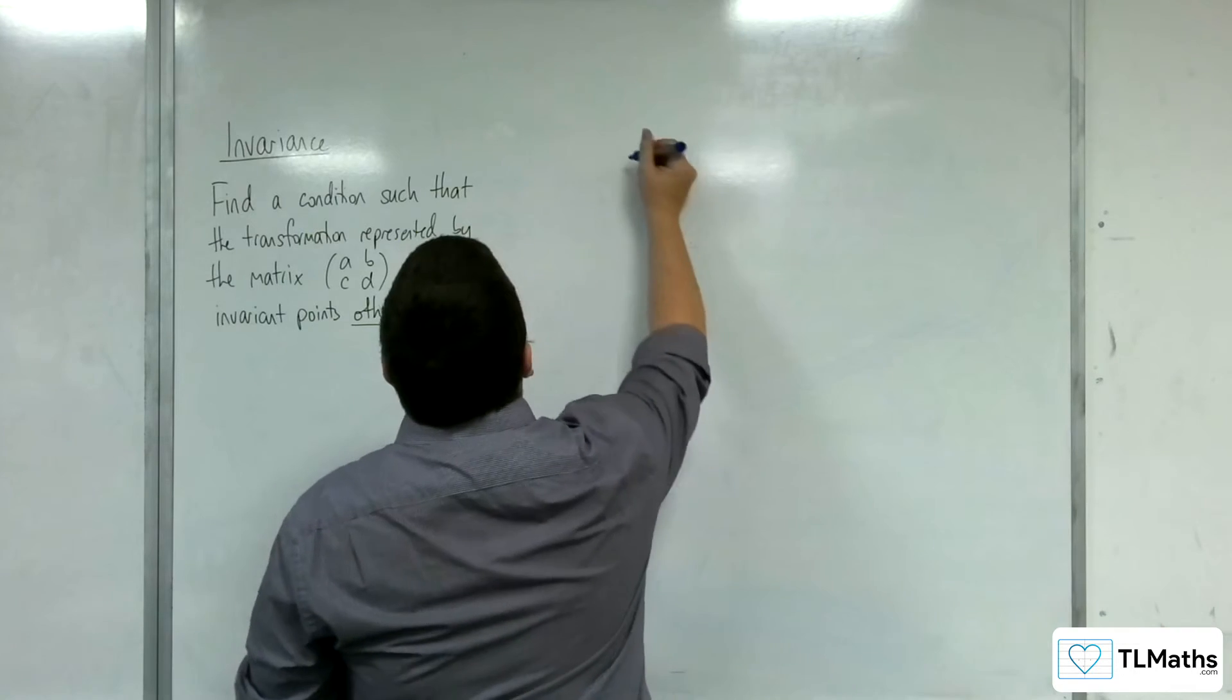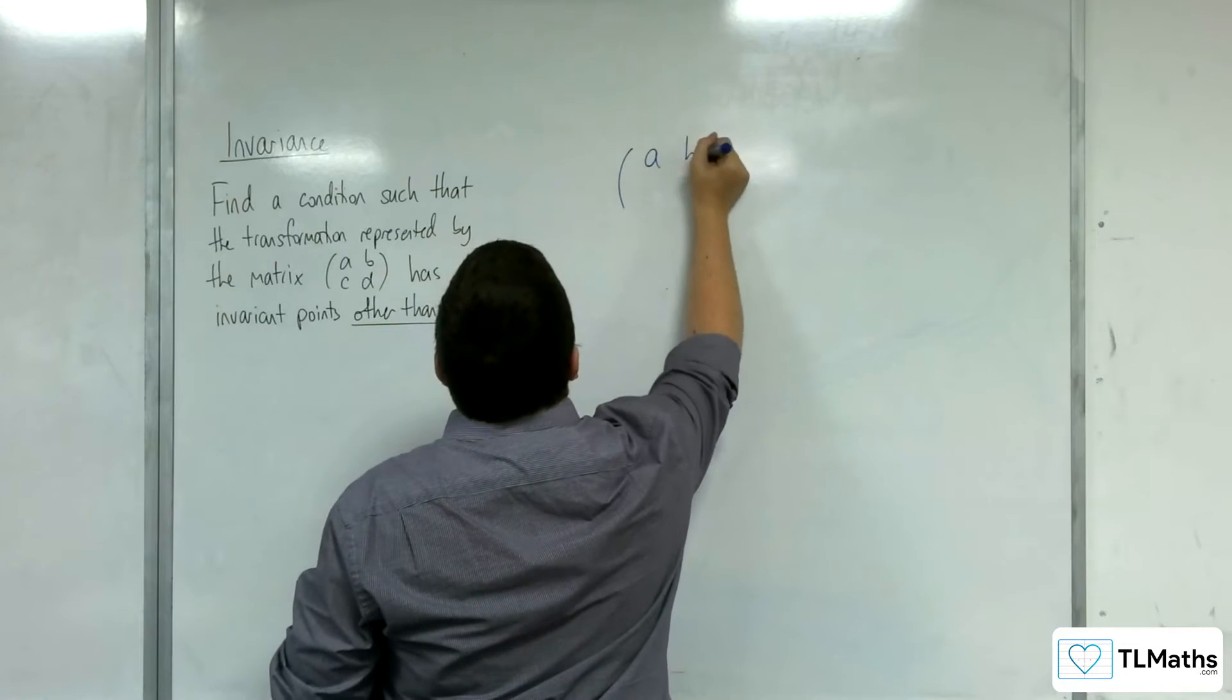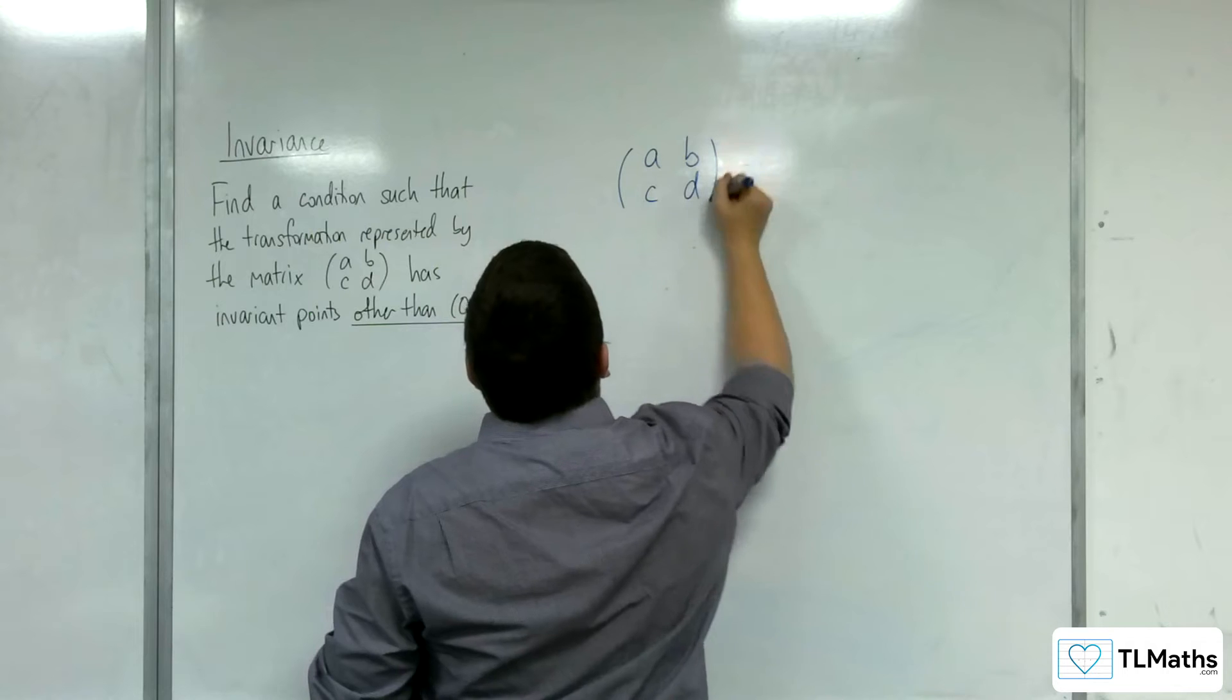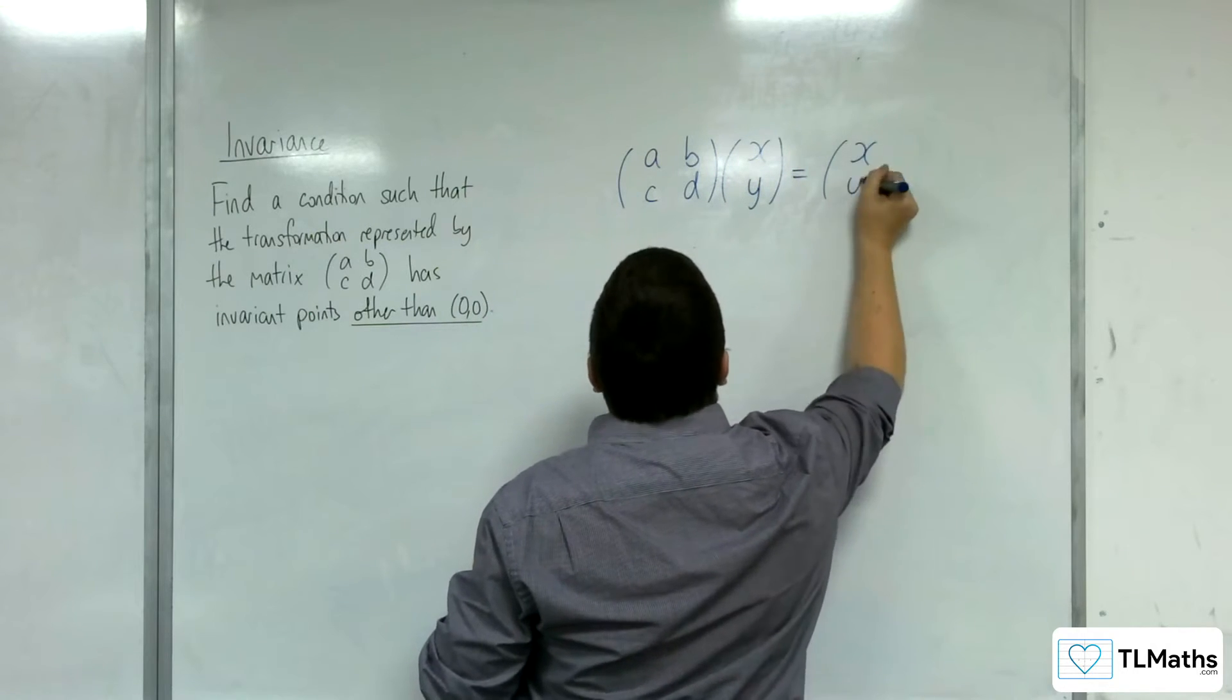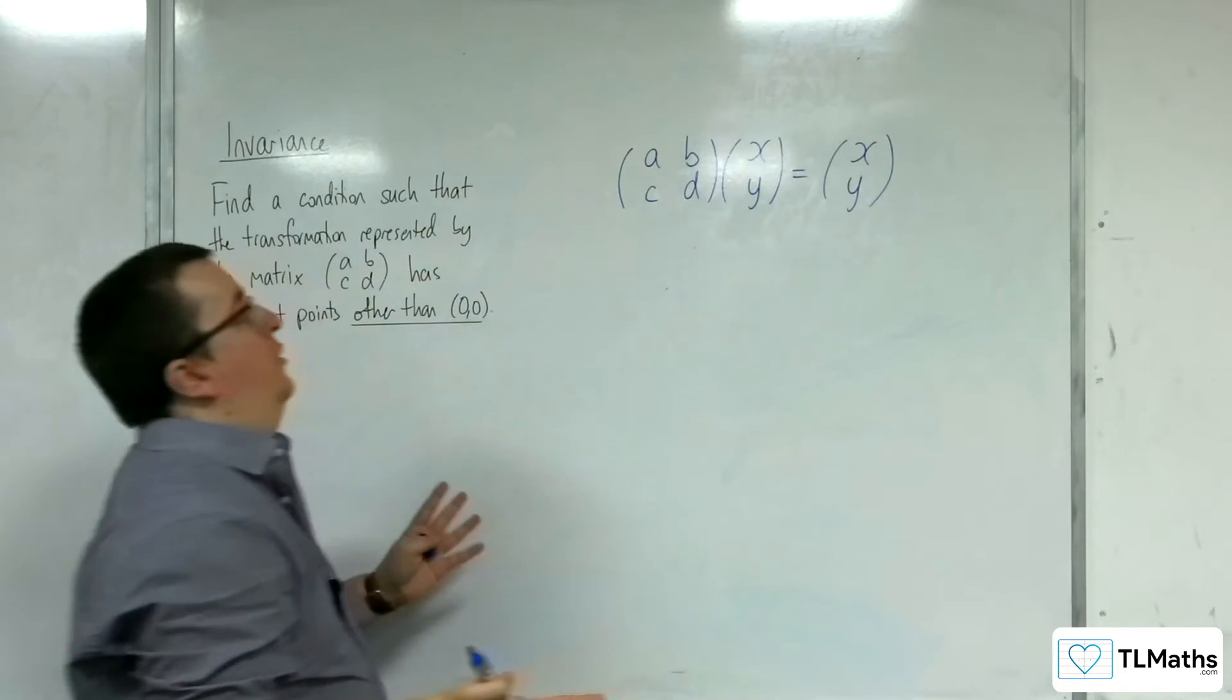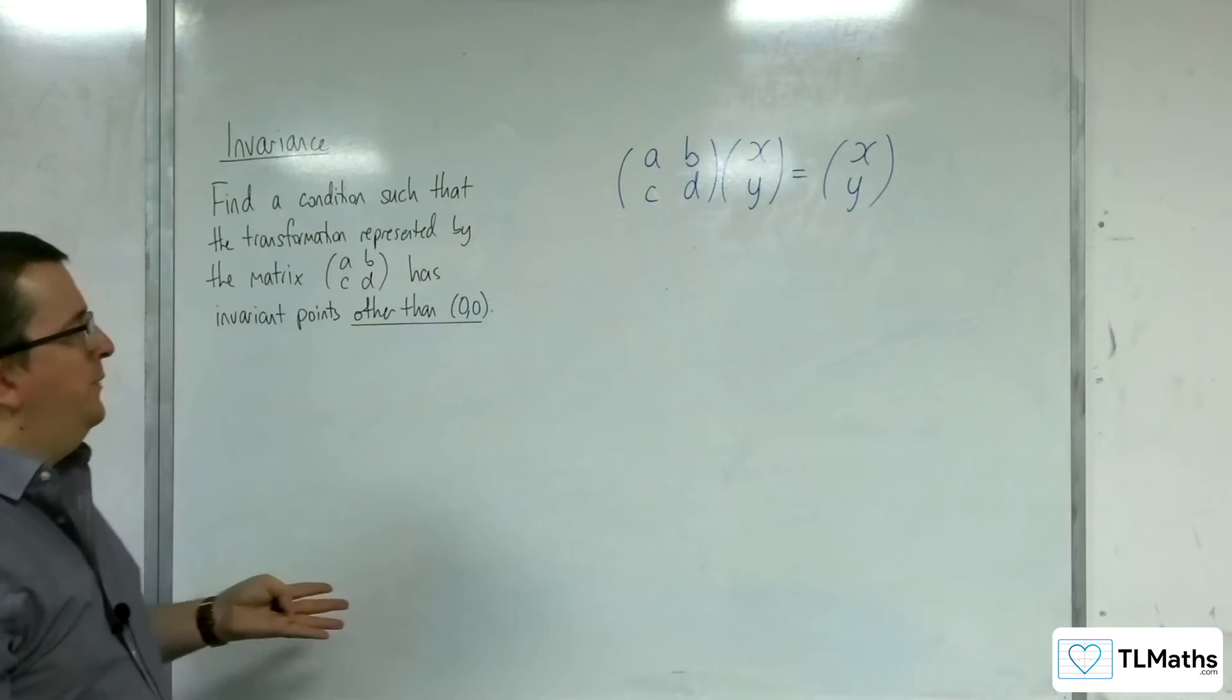What we're looking for is (a b; c d) being applied to (x; y) to give me (x; y). That would be the definition of an invariant point.